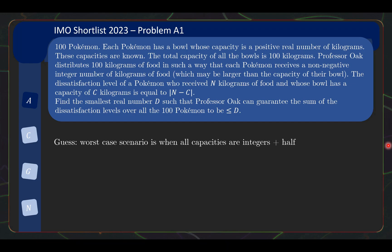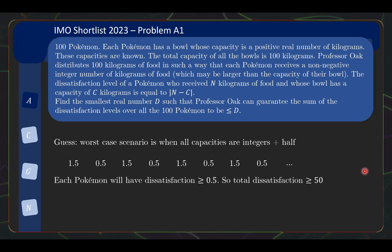Let's think about what is the worst case scenario. The worst case is when all capacities are integers plus a half — for example, capacities like 1.5, 0.5, 1.5, 0.5, and so on, where the sum of capacities is still 100 kg. In this case, no matter how you distribute the food (since food must be integers), each Pokémon will have a dissatisfaction of at least 0.5, so the total dissatisfaction will be at least 50. This suggests the smallest real number D that meets the condition is 50.